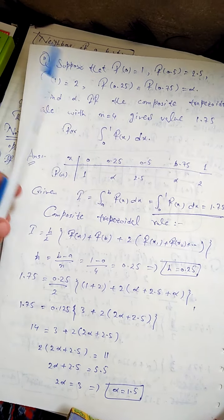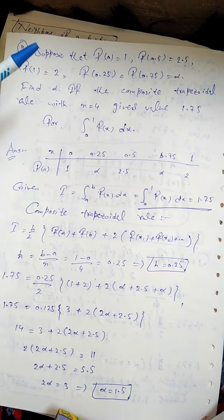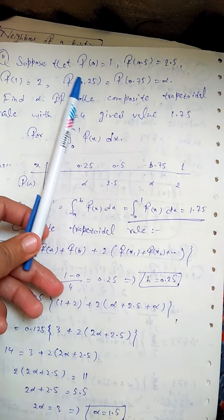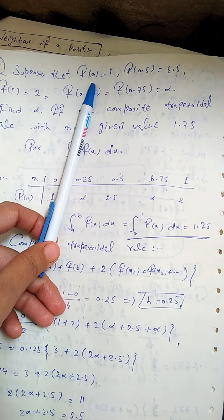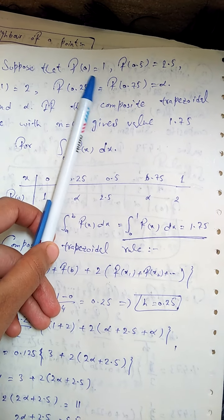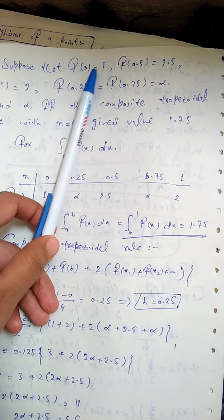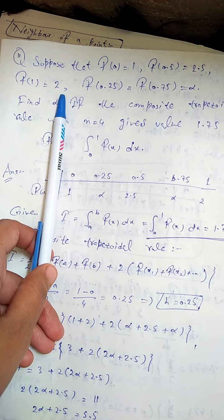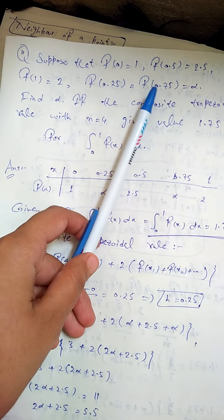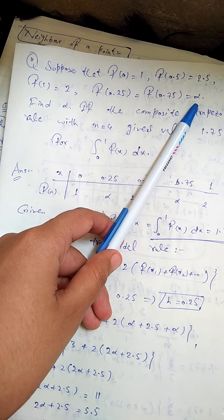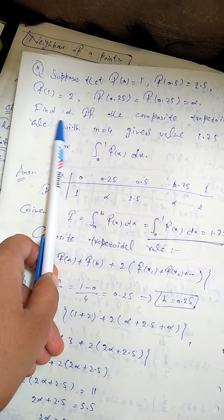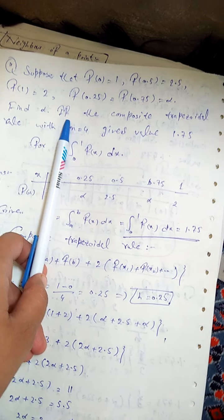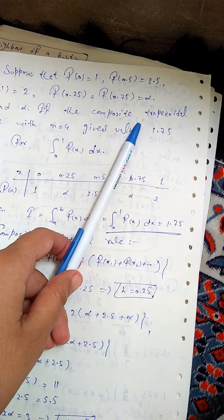I will show you some examples. Suppose that you have functional values given. You put X value and Y value. X value is given, alpha is given. Now you have a question: find this alpha. And it says which formula to use.